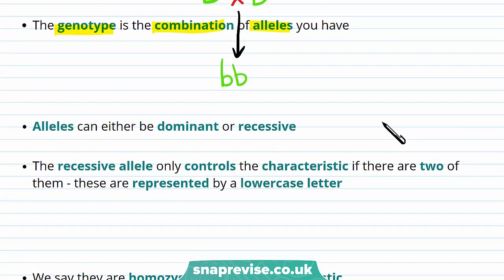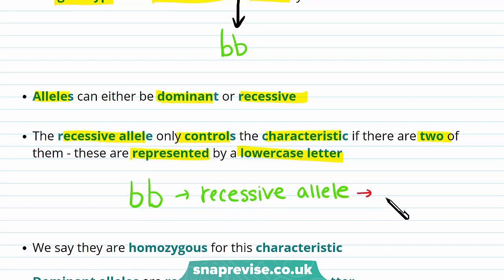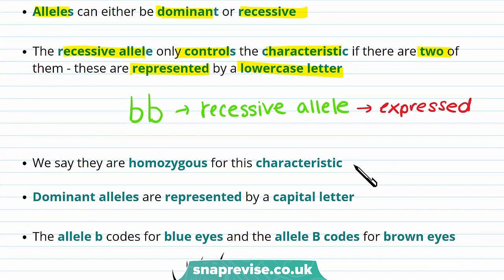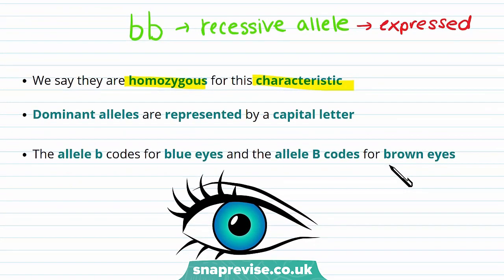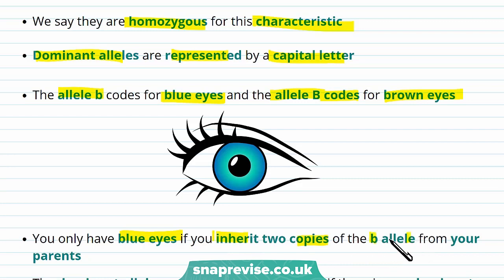It's not as simple as this, as alleles can either be dominant or recessive. The recessive allele only controls the characteristic if there are two of them at once. These are represented by a lowercase letter, so a lowercase b would represent a recessive allele, and if you have two of them, the characteristic they control is expressed. Because there are two of the same kind, we say they're homozygous for this characteristic. Dominant alleles are represented by a capital letter. For instance, the allele lowercase b codes for blue eyes — you can tell that this allele is recessive as it's shown as lowercase. And the allele B codes for brown eyes — you can tell it's dominant as it's represented by a capital B. This means you only have blue eyes if you inherit two copies of the lowercase b allele from your parents.